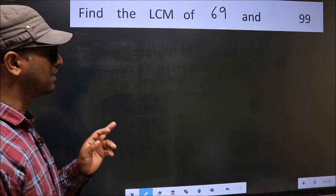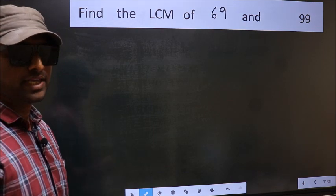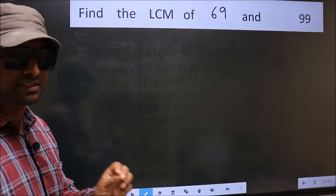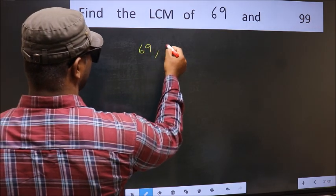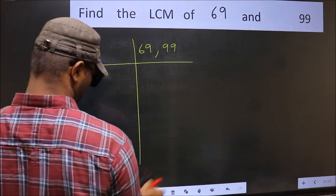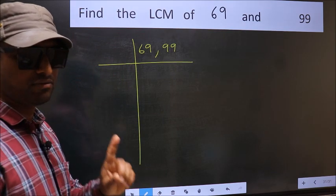Find the LCM of 69 and 99. To find the LCM, we should frame it in this way. 69, 99. This is your step 1.